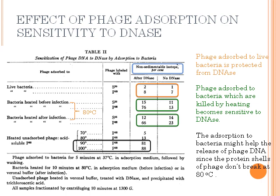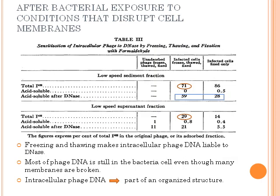However, phage adsorbed to bacteria killed by heating at 80 degrees becomes sensitive to DNase. Therefore, they supposed that adsorption to bacteria might help the release of phage DNA, since the protein shells of phage don't break at 80 degrees. Similar to the outcome of disrupting bacterial membranes by heat shock, freezing and thawing infected cells also releases the phage DNA to be sensitive to degradation by DNase. Much of the phage DNA remains associated with the bacteria, but disruption of the bacterial membranes exposes the DNA to DNase. This suggests that phage DNA becomes part of an organized structure involving the bacterial membranes during the course of the infection process.